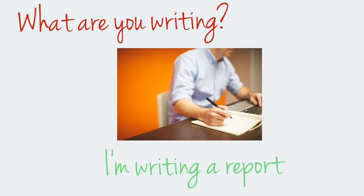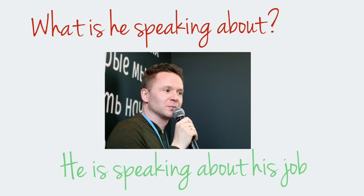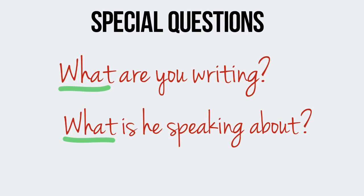What are you writing? I'm writing a report. What is he speaking about? He is speaking about his job. These are special questions in present continuous. Special questions start with question words. In these sentences, the question word is 'what.' Repeat after me: What are you writing? What is he speaking about?